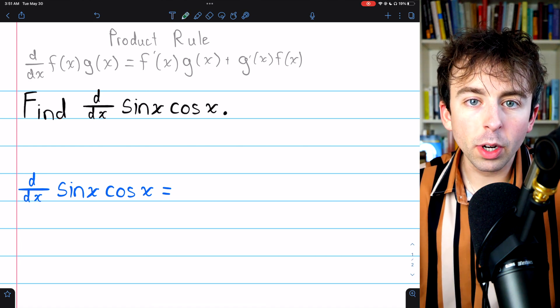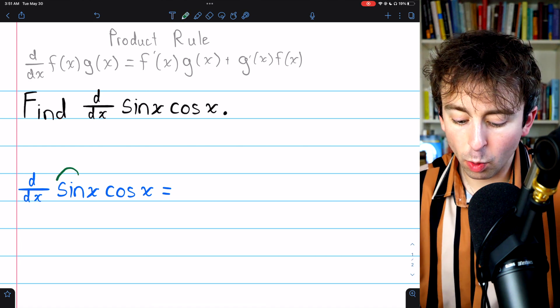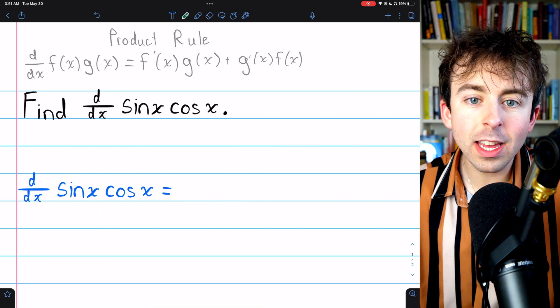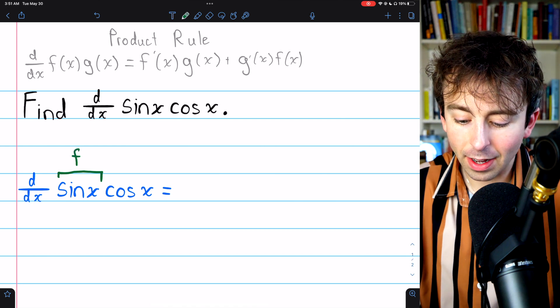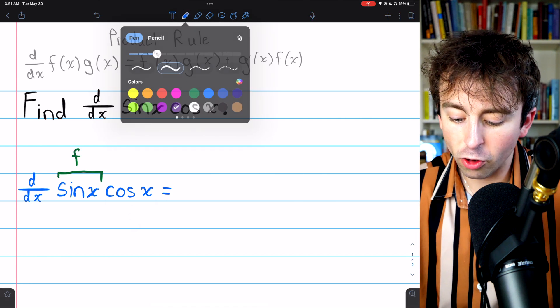Since multiplication is commutative, it doesn't actually matter which one of these functions we call f and which we call g, but let's follow convention and call the function on the left f, and we'll call the function on the right g.